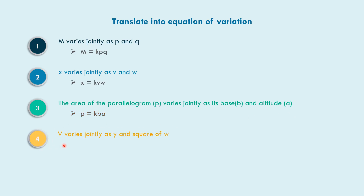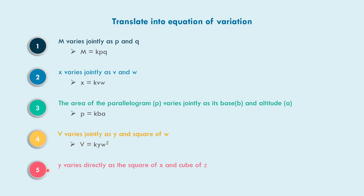In example number four, v varies jointly as y and the square of w. The square of w is w squared, so v is equal to k times y times w squared. In example number five, y varies jointly as the square of x and the cube of z. So the equation of variation is y equals k times x squared times z cubed.